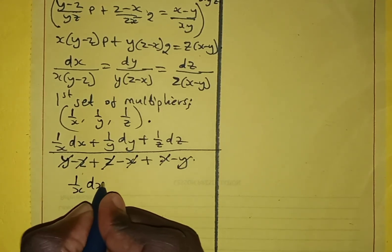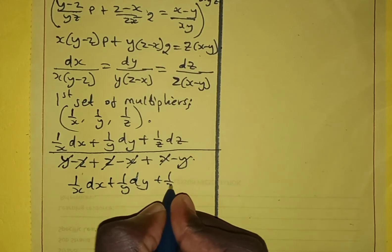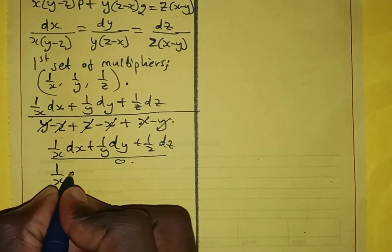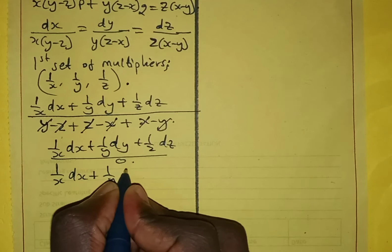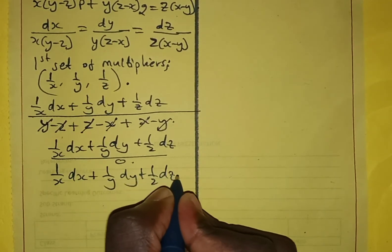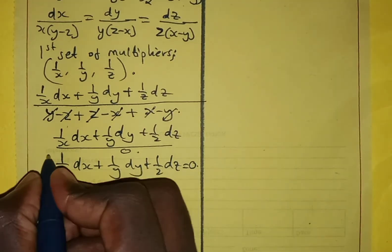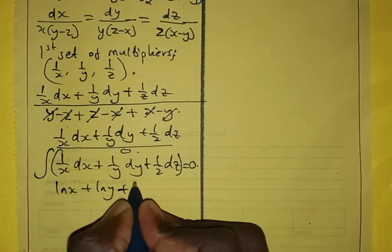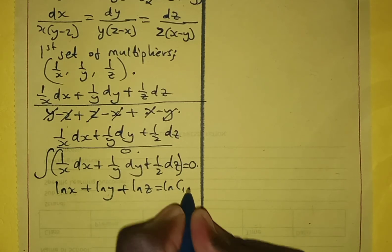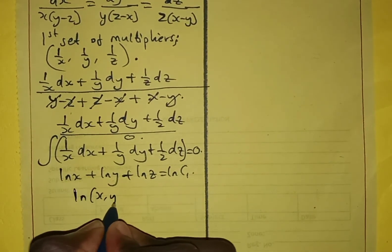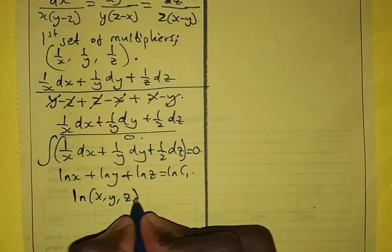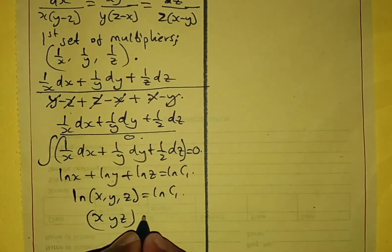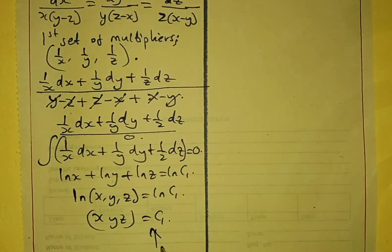So we have (1/x)dx + (1/y)dy + (1/z)dz over 0, which means (1/x)dx + (1/y)dy + (1/z)dz equals zero. Integrating this gives ln x + ln y + ln z equals ln c1, so ln(xyz) equals ln c1, and therefore xyz equals c1. This is our first solution.